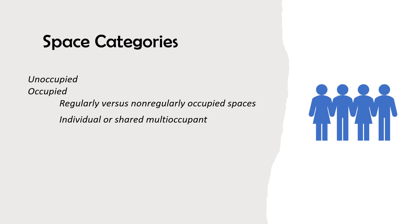Regularly occupied spaces are areas where people spend more than one hour on continuous occupancy per person per day. For spaces that are not used daily, the classification should be based on the time a typical occupant spends in the space when it is in use. Non-regularly occupied spaces are areas that people pass through.